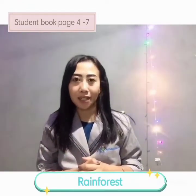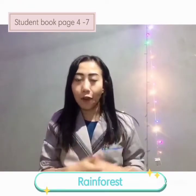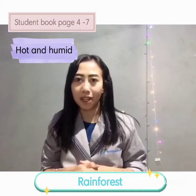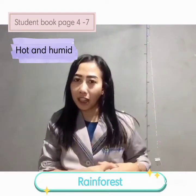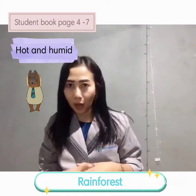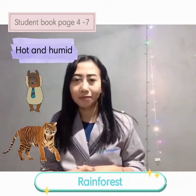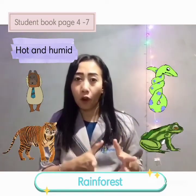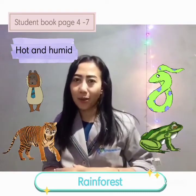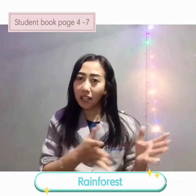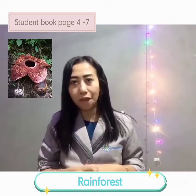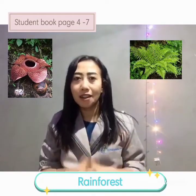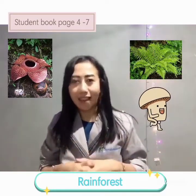The third is rainforest. The environment of the rainforest is hot and humid. The animals that live in the rainforest, for example, orangutan, tiger, tree snake, tree frog, and etc. The plants that live in the rainforest, for example, rafflesia, fern, mushroom, and etc.